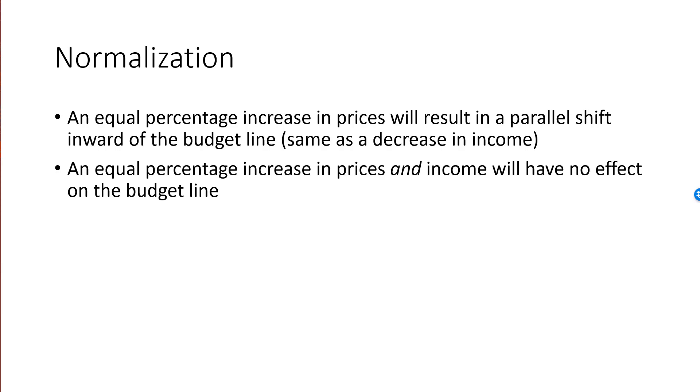If I make an equal percentage increase in both prices and in income, then there will be no change whatsoever to the budget line. So we have this one degree of freedom in the parameters, which is very natural. I mean, it really should not matter if I measure prices and income in Swedish crowns, or if I measure them in Euro. My budget should be the same.